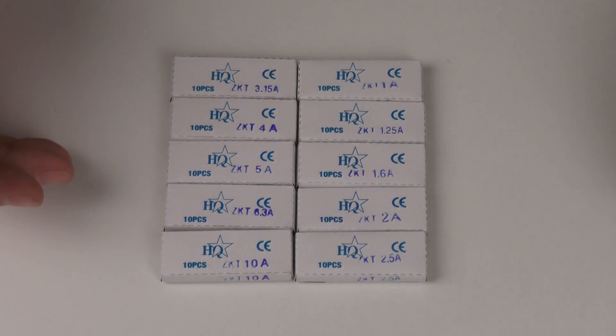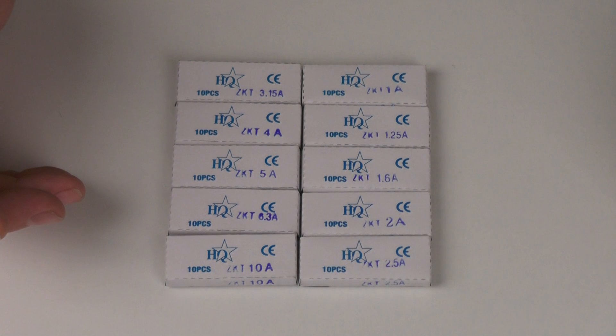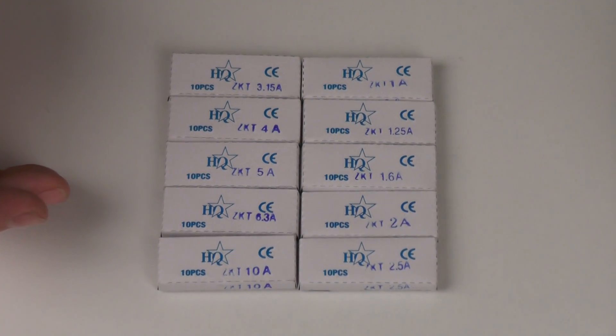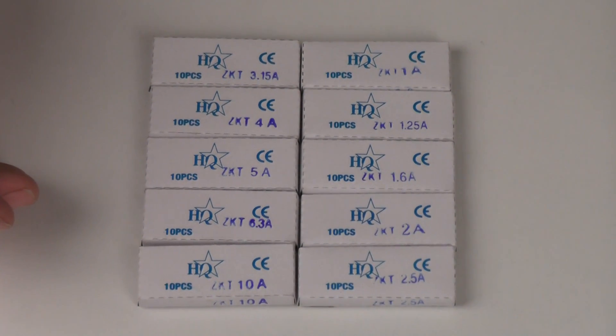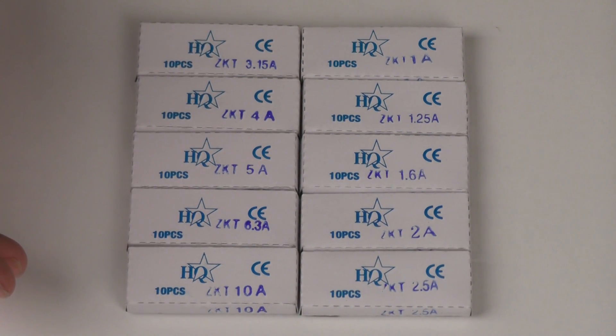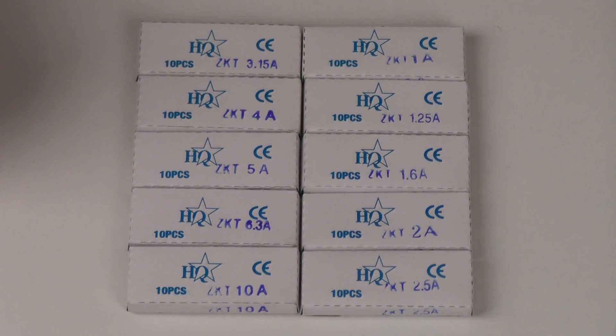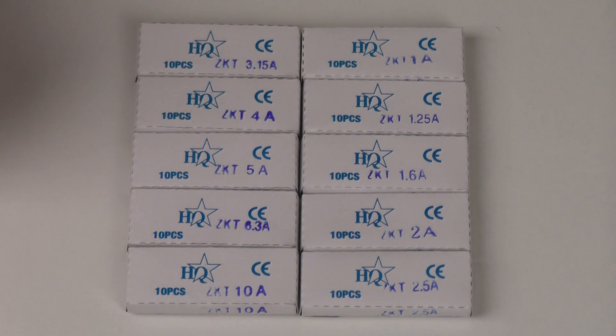The fuses in question are 20mm delay types and that means they're also known as anti-surge fuses or slow blow. You may have heard these terms before. They're most commonly connected in the mains input circuit of many electrical appliances such as televisions, hi-fis, DVD players, etc.